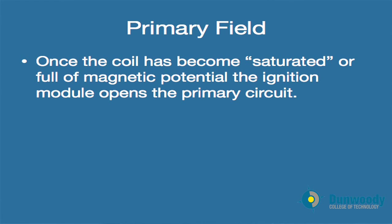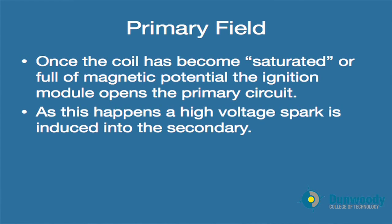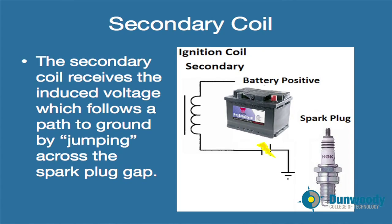We'll explore why that process happens in more detail later. As this happens, a high voltage spark is induced in the secondary when the field collapses. The secondary coil then receives the induced voltage — that 40,000 volts we discussed — and this follows a path to ground by jumping across the spark plug gap within the spark plug itself.